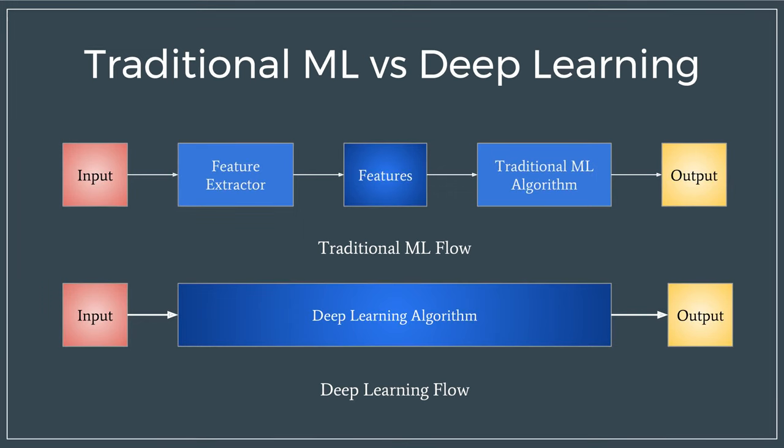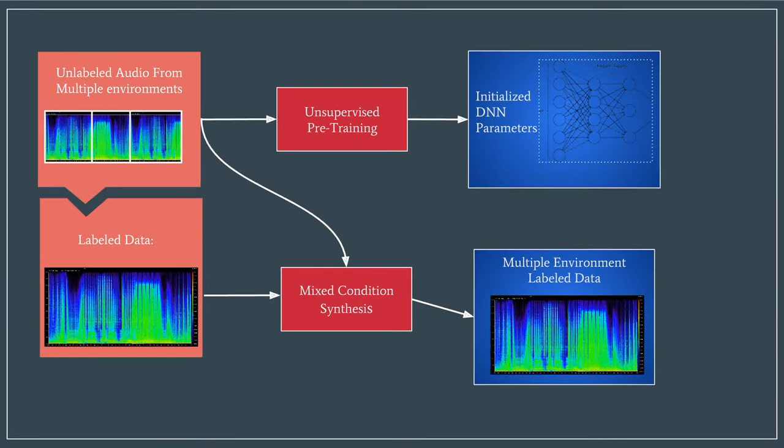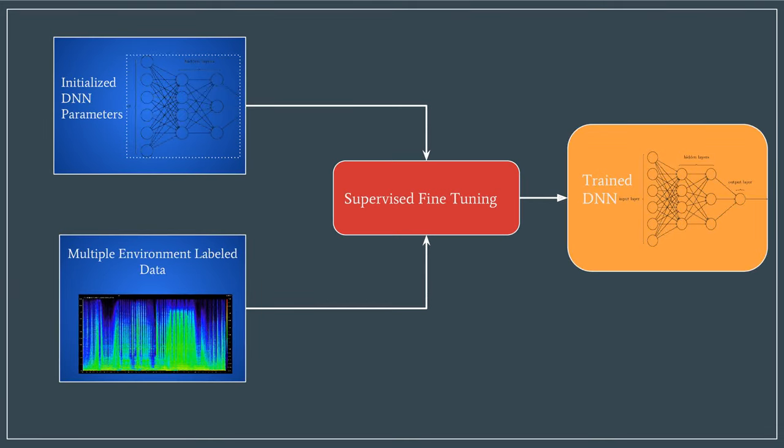Instead of extracting specific features for classification, deep learning learns to extract the features automatically from the data. It requires a large labeled dataset to learn from because of the sheer number of parameters. Getting this large labeled dataset is very difficult. To solve this, the supervised model is initialized with weights learned using unsupervised pre-training. For the supervised classification, a synthetic dataset was created. The supervised model is trained over this dataset to classify the audio.